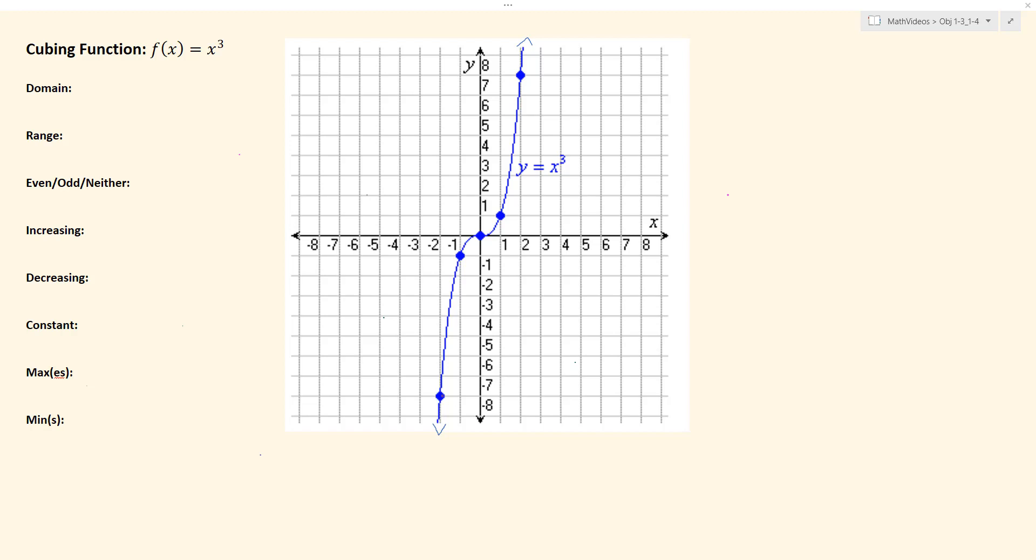So when you think about a graph, it's made up of an infinite number of points, some (x, y)'s. And when we talk about the domain, we're focusing on the x coordinates. So in other words, for this graph, which x coordinates are present, if you will.